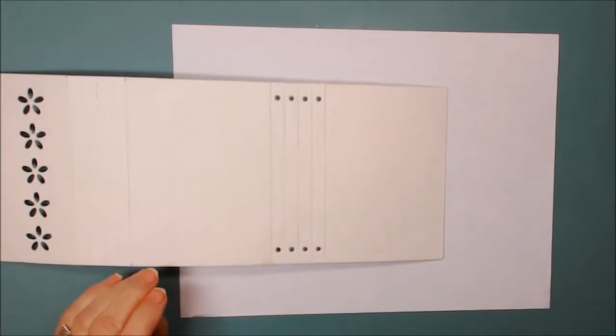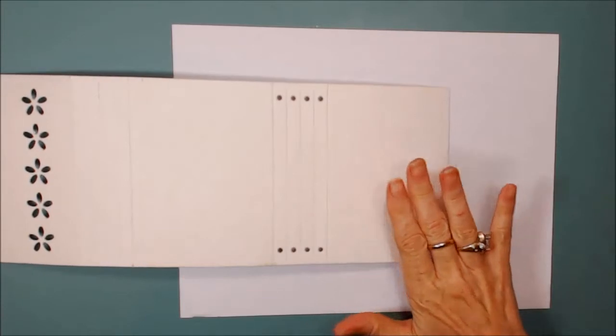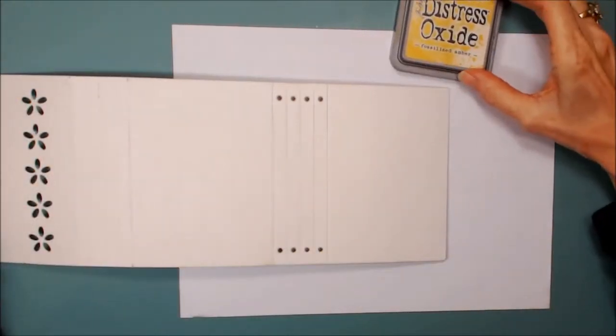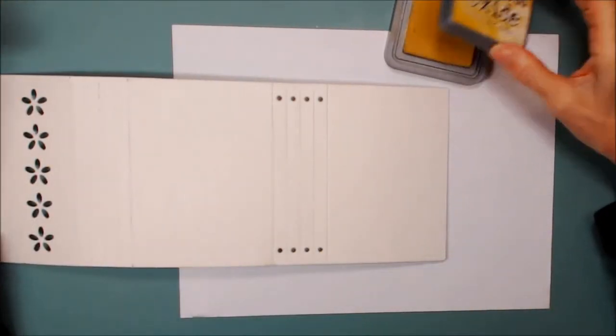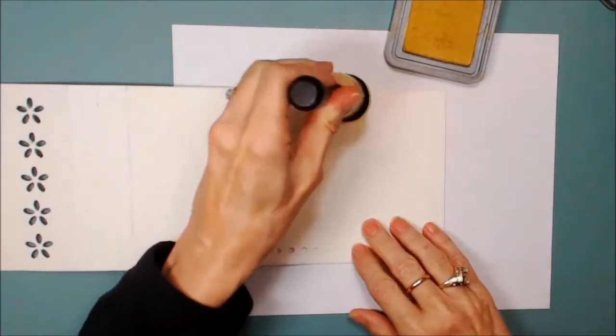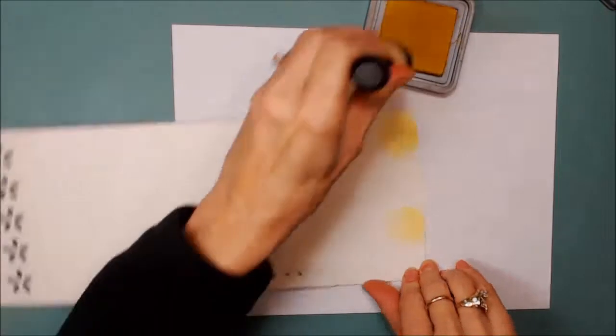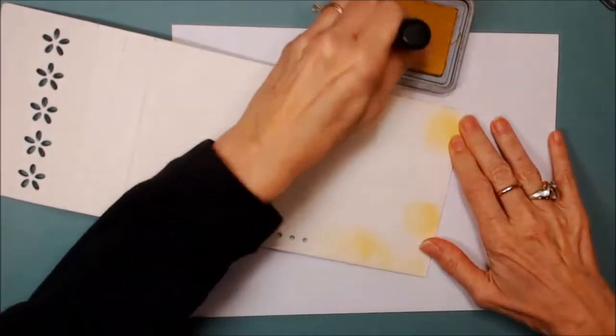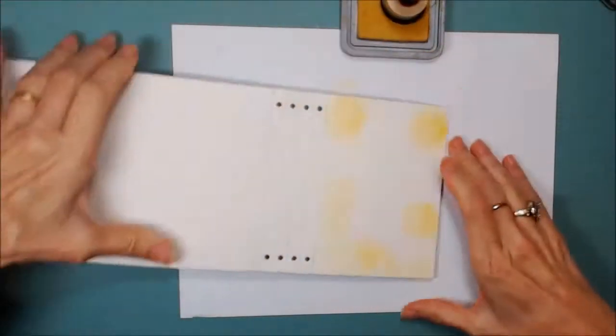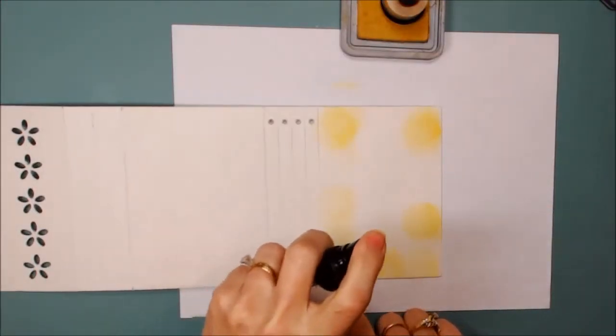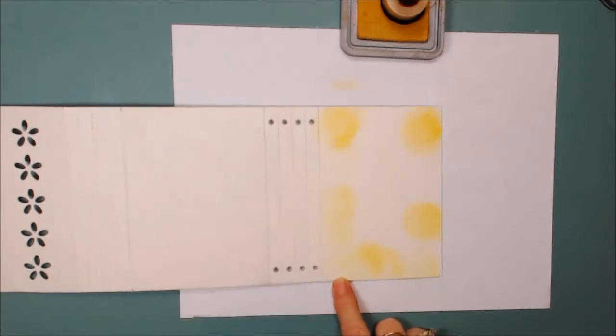Now I'm going to use Distress Oxide ink to color my cover. I am going to be putting some paper on it, so I'm going to be concentrating on the edges more than anything. So I'm going to start off with Fossilized Amber, and I'm just going to apply some ink here and there. Now the fun thing about Distress Oxides is when you add water, the colors just come alive.